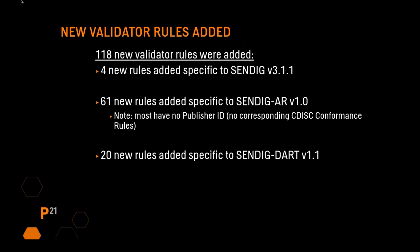There were 118 new validator rules added. Four of these new rules were added specific to SendIG version 3.1.1, again from CDISC SEND conformance rules version 4.0. 61 new rules were added specific to SendIG Animal Rule version 1.0 — this is the standard that has no corresponding CDISC conformance rules.